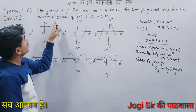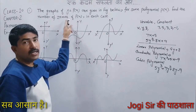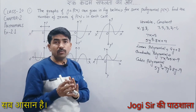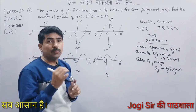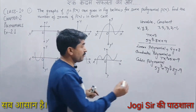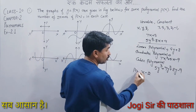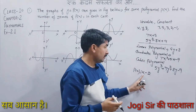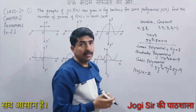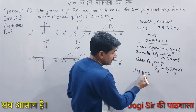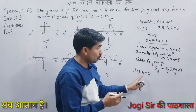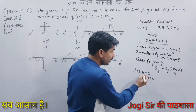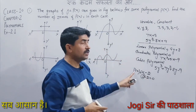Now they are asking about zeros. What are zeros? Zeros are the solution of that polynomial — meaning, which value makes the polynomial equal to 0. Suppose we take x minus 2. It is a linear polynomial in x. If we put x equal to 2, we get 2 minus 2, which equals 0. This means 2 is a zero of this polynomial.